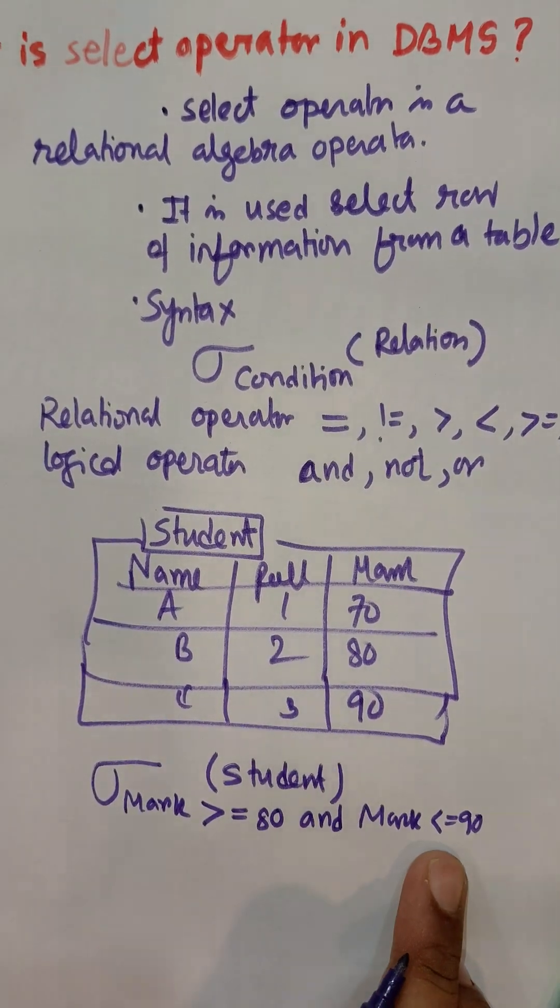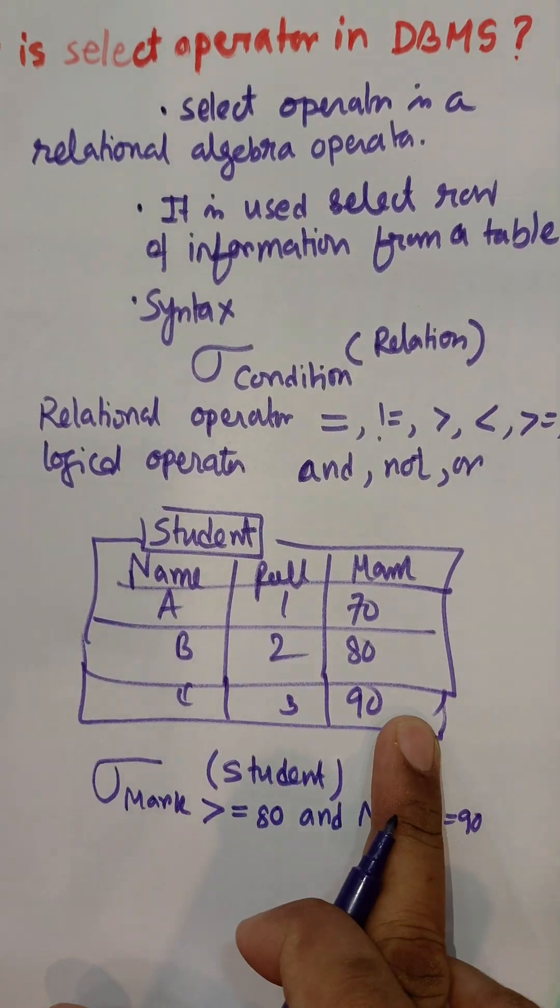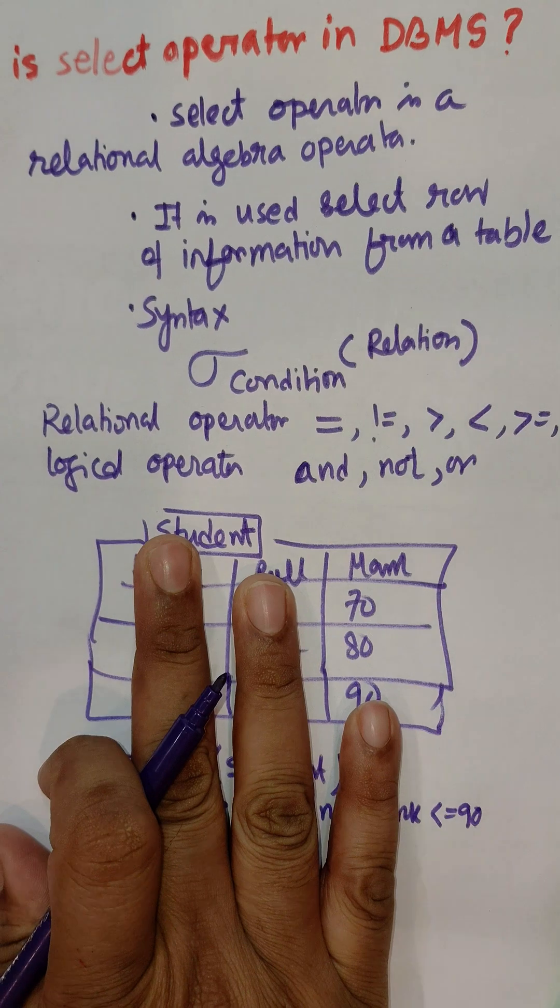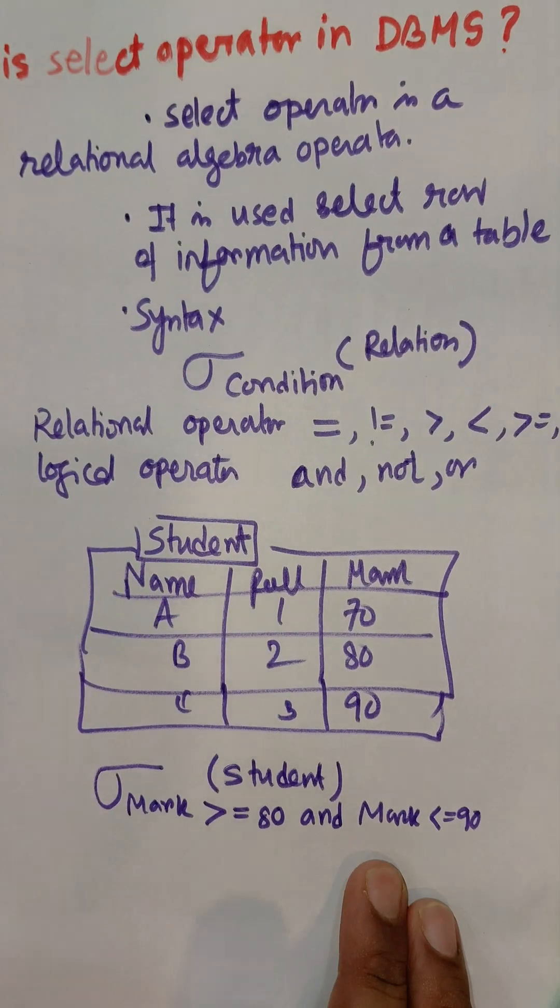The second row and third row are also selected. Select operator is mainly used to select rows of information.